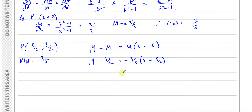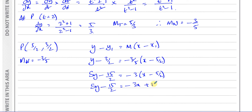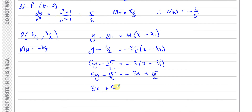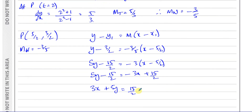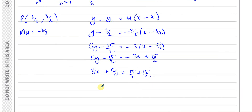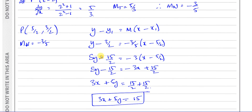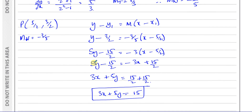Using y minus y1 equals m times x minus x1, we have y minus 3 over 2 equals minus 3 fifths times (x minus 5 over 2). Multiplying both sides by 5: 5y minus 15 over 2 equals minus 3 times (x minus 5 over 2), which expands to minus 3x plus 15 over 2. Adding 3x to both sides: 3x plus 5y equals 15 over 2 plus 15 over 2, which is 30 over 2, which equals 15. So we have 3x plus 5y equals 15 — that's the equation of the straight line.